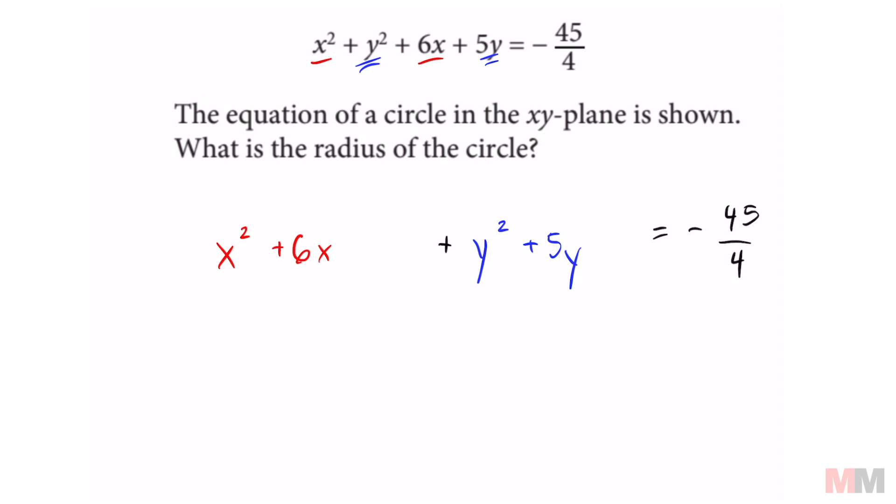When I am completing the square, I automatically just put parentheses squared like that. And to determine what goes inside that parentheses, it is just going to be half of this b term right here. Half of 6 will be 3.